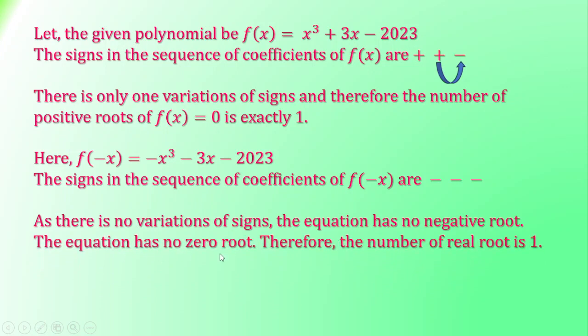The equation has no zero root. Therefore, the number of real roots is only 1, which we get here—that is, the number of positive roots is exactly 1, and there is no negative root. The real root is only 1. And the equation being of degree 3, this equation has 3 roots.